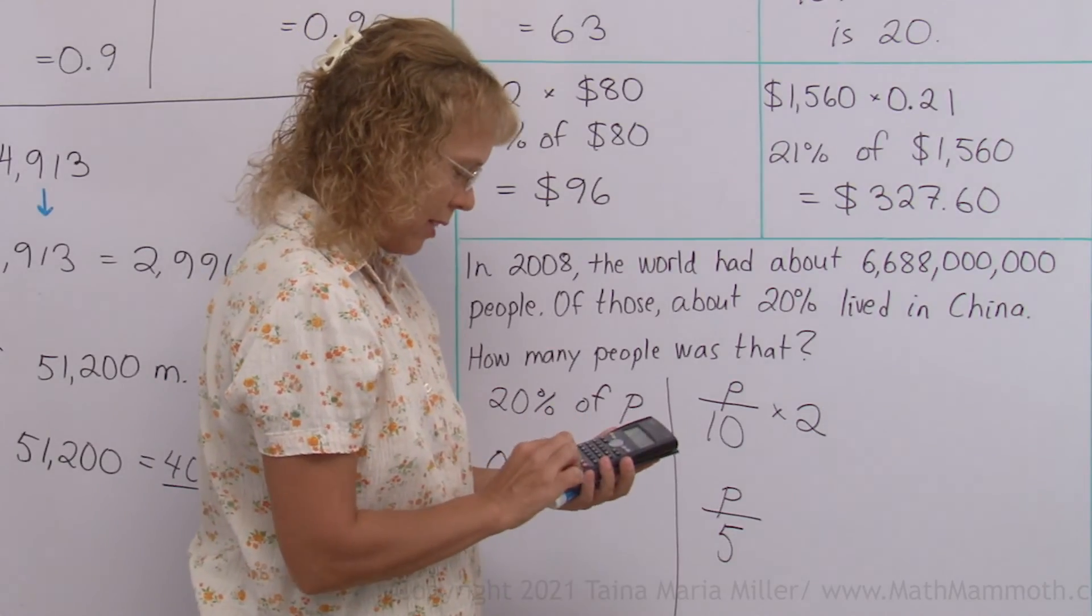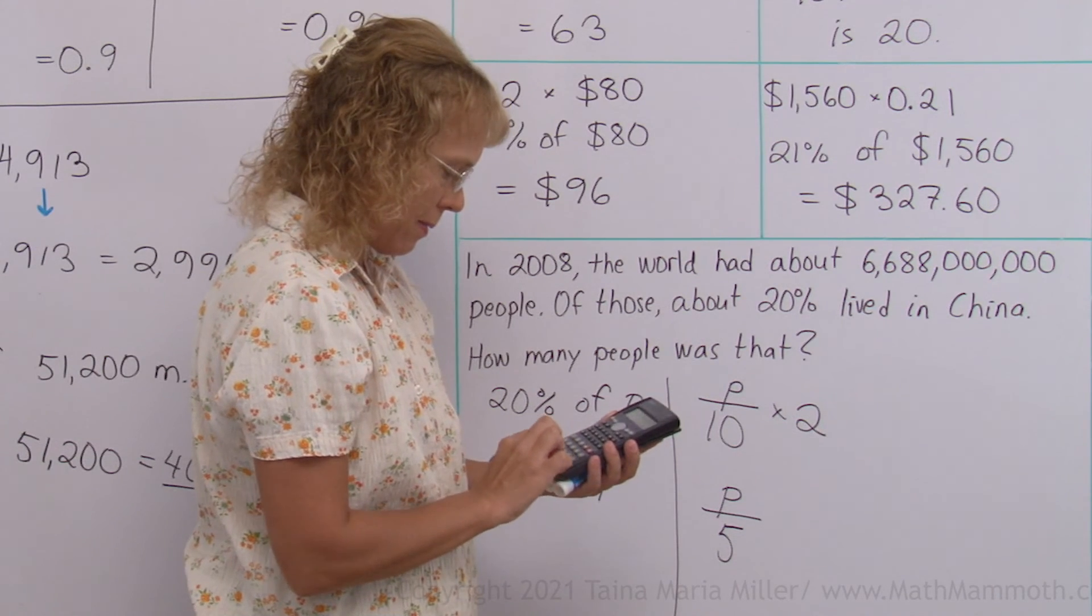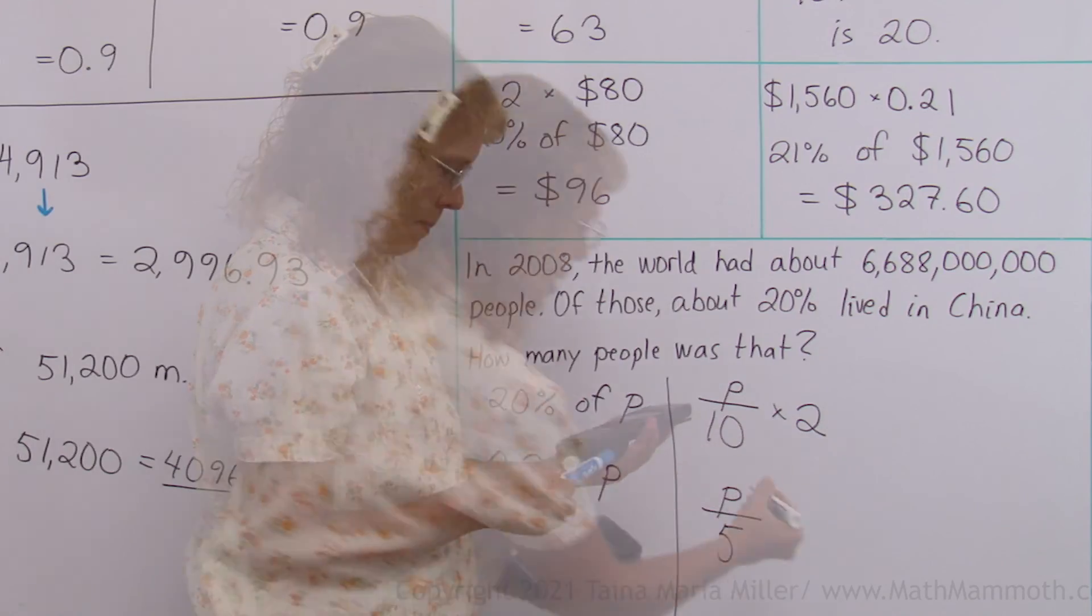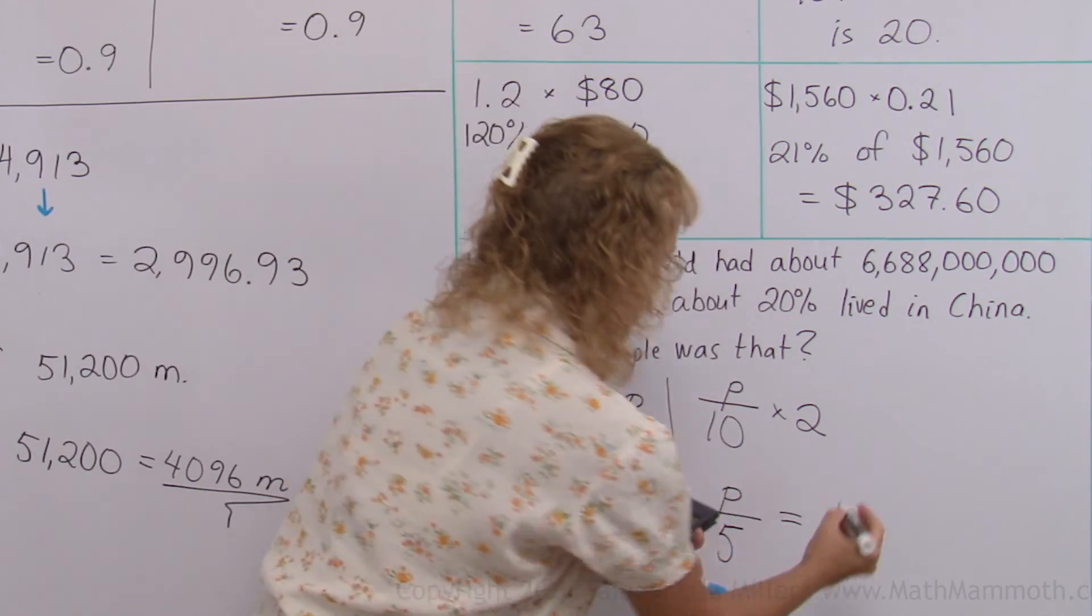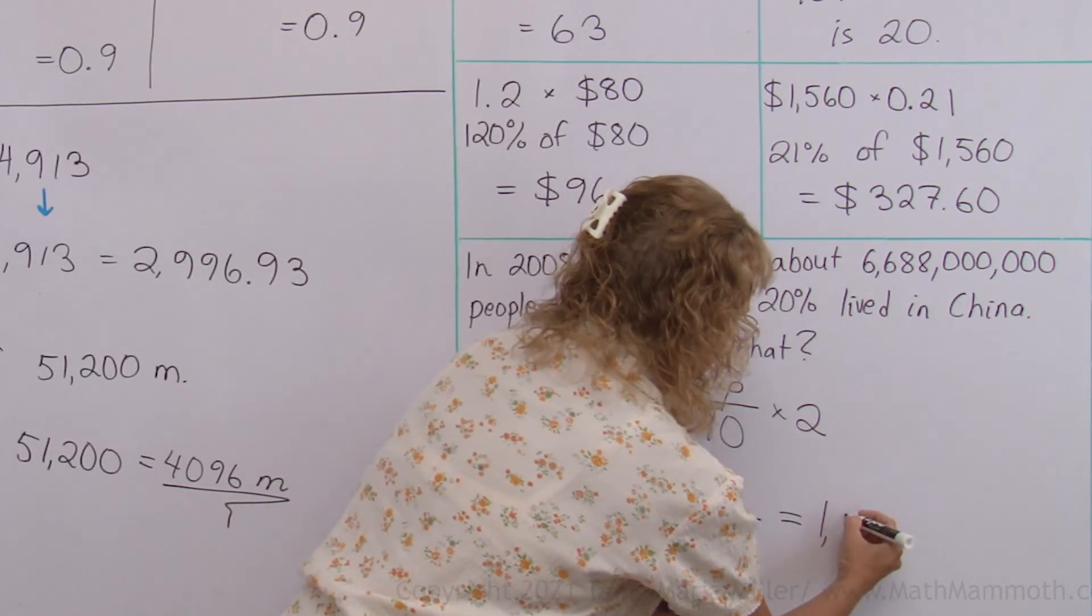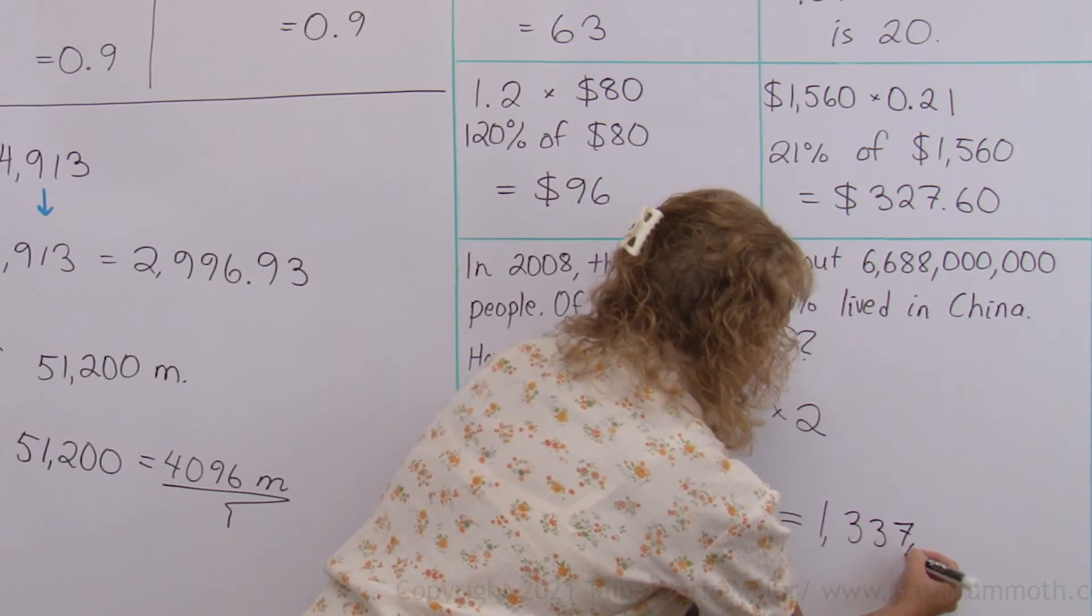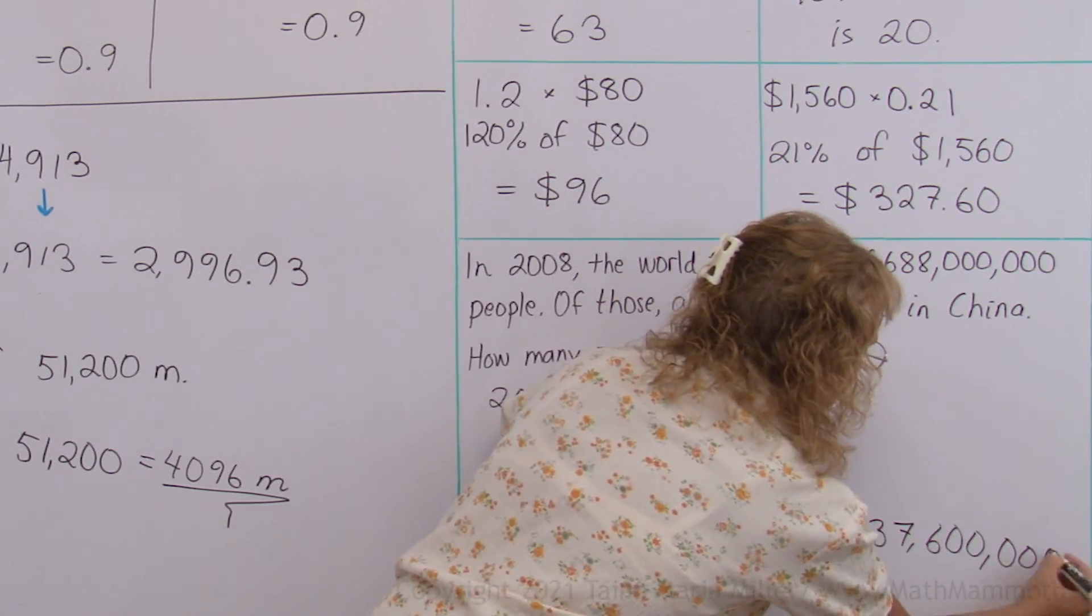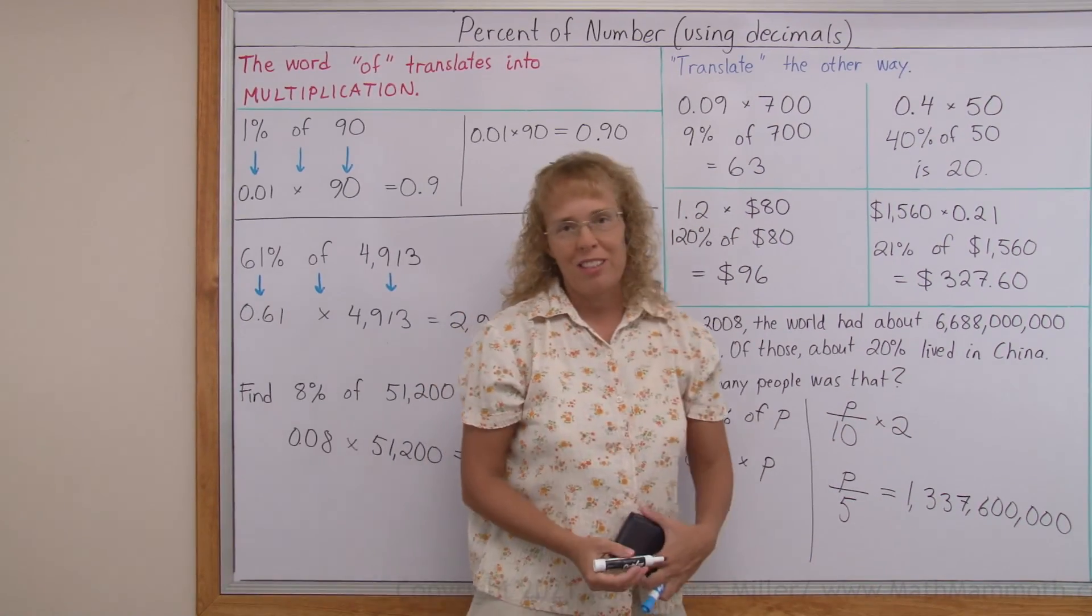We have 6688 divided by 5. And I get 1 billion, 337 million, 600,000. We are all done with this lesson.